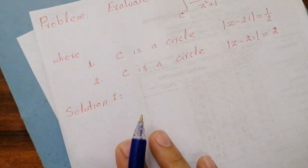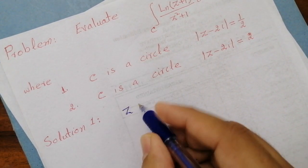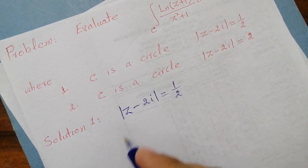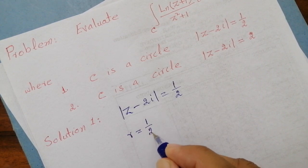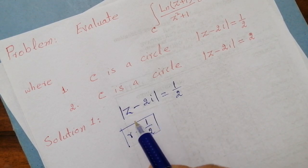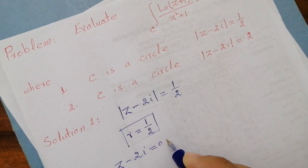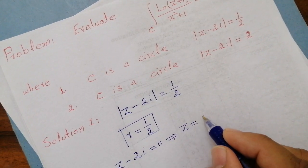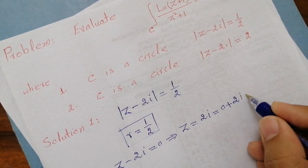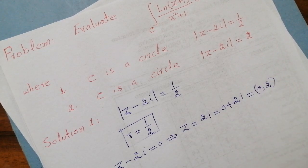To solve the first part, we know that we have the circle |z − 2i| = 1/2, which is a circle with radius 1/2. To find the center, we put z − 2i = 0, which gives z = 2i. This can be written as 0 + 2i, so in the form of a point the center has x-coordinate 0 and y-coordinate 2.